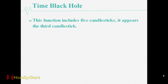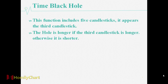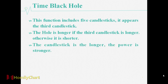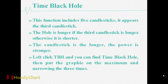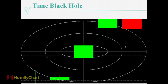This function includes five candlesticks. It appears at the third candlestick. The power is stronger if the third candlestick is longer; otherwise it is shorter. The longer the candlestick, the stronger the power. Left-click the TV edge and you can find Time Black Hole from Homie software. Then put the cursor on the maximum and narrow it three times. This is the Time Black Hole, and it can help us to judge the turning point.